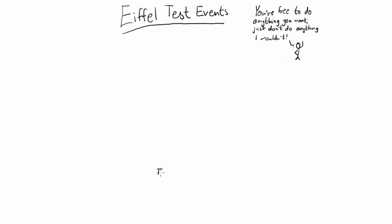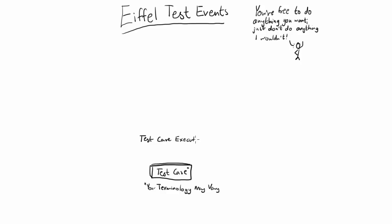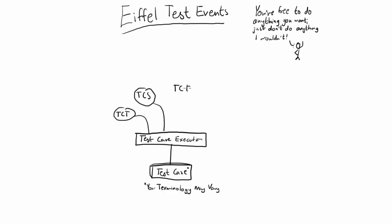The most fundamental entity is the test case. Nomenclature in the industry in the testing area is rather confused, but Eiffel uses test case for the smallest atomic executable piece of a test. It may be automated or manual — it doesn't really matter. The execution of a test case is represented by four types of events: test case triggered, test case started, test case finished, and test case cancelled, analogous to the four event types used to represent activity executions.